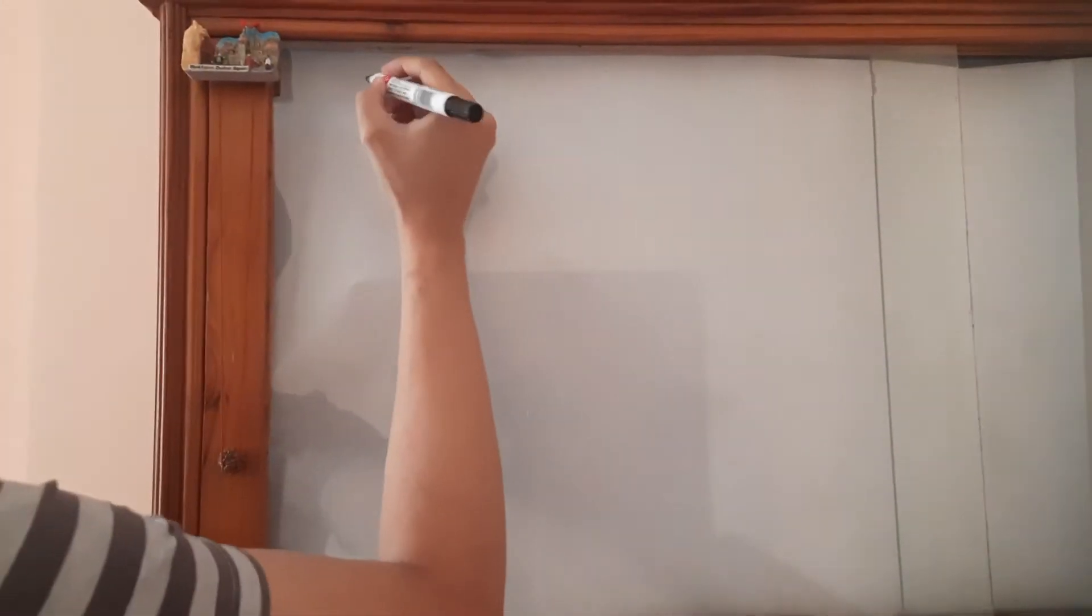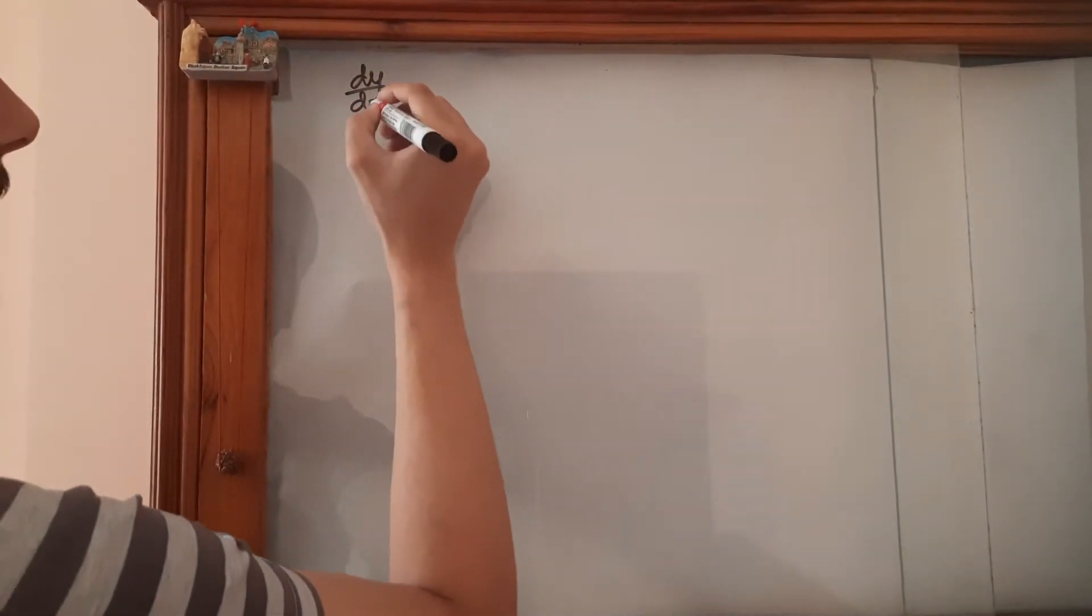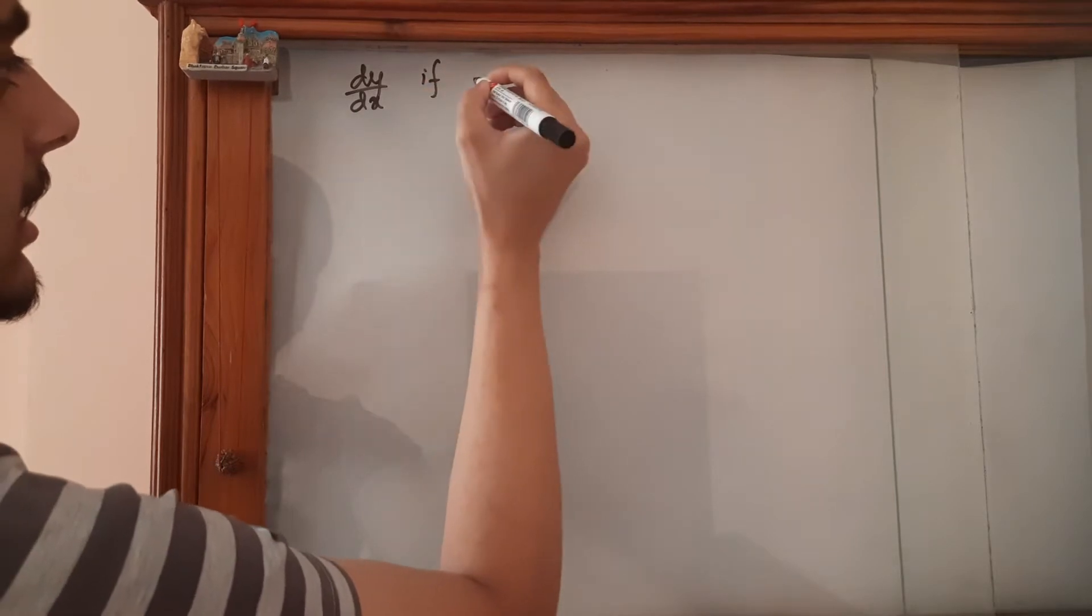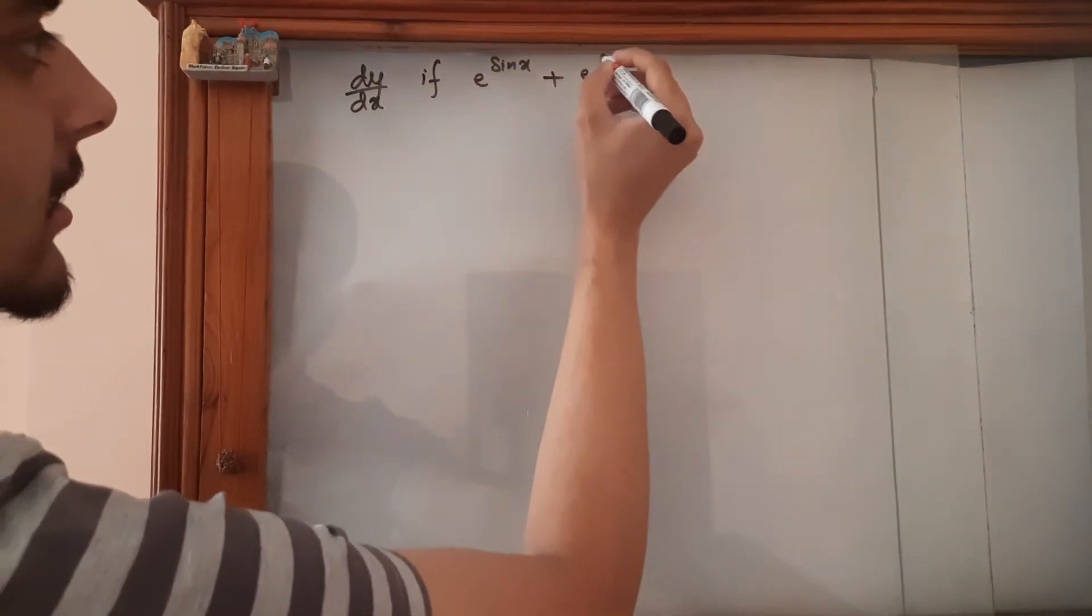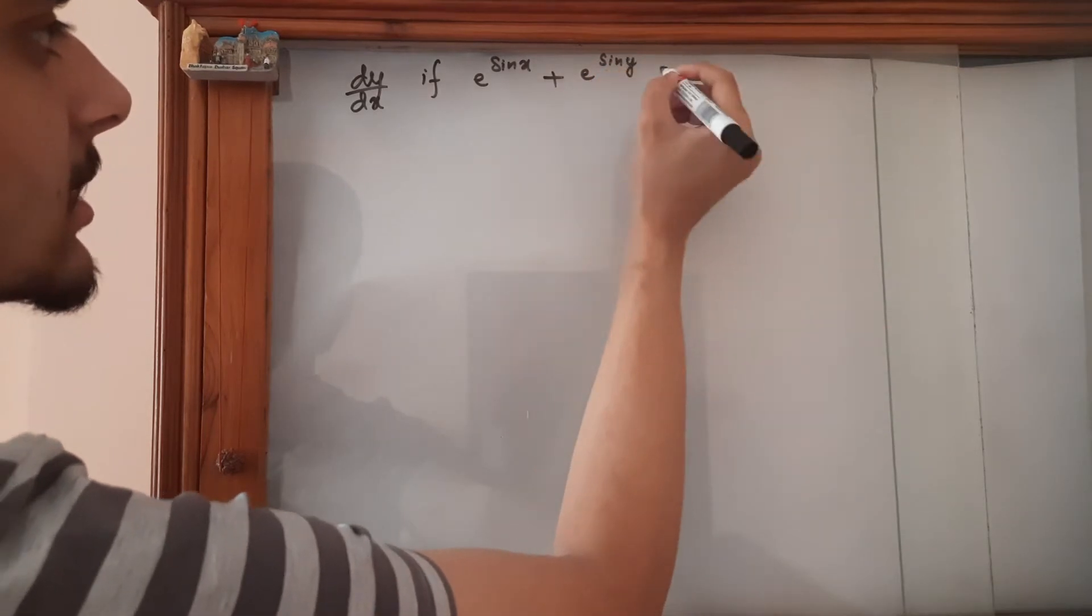Hello everyone. So today we are going to find dy upon dx if e to the power sine x plus e to the power sine y is equal to 1.